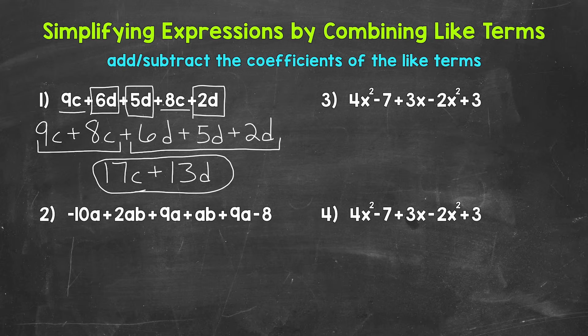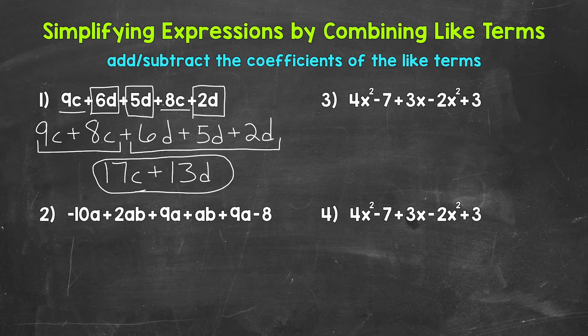17c plus 13d is equivalent to the original expression. We went from 5 total terms in the original expression and simplified it to 2 total terms by combining like terms. Let's move on to number 2 where we have negative 10a plus 2ab plus 9ab plus 9a minus 8. Let's start by identifying any like terms. We have negative 10a and 9a and another 9a — all three have the variable a to the understood power of 1. We also have 2ab, so let's box those in.